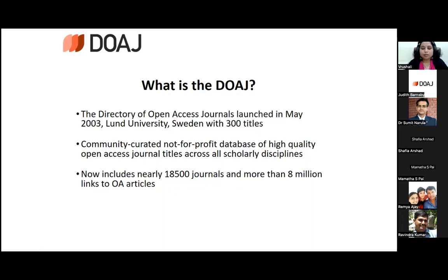The Directory of Open Access Journals started in May 2003 at Lund University, Sweden, with 300 titles only. It's a non-profit organization covering high quality Open Access Journals across all scholarly disciplines. Now it includes nearly 18,300 journals and more than 8 million links to Open Access articles. From 2003 with 300 titles to 2022 with 18,300 journals — it's an all-over-the-world recognized indexing service.